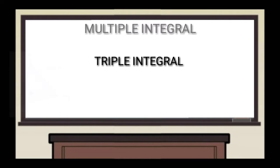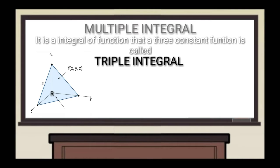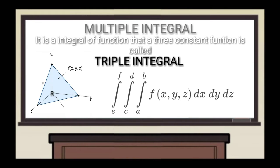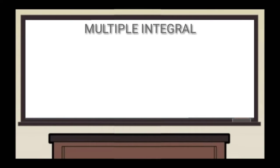The same volume can be obtained via the triple integral. It is the integral of a function that has three variables — a constant function f(x, y, z) equals one — over the above-mentioned region between the surface and the plane. This volume is represented by a triple integral of f(x, y, z) dx dy dz, or equivalently the triple integral of f(x, y, z) as x approaches a to b, y approaches c to d, and z approaches e to f.